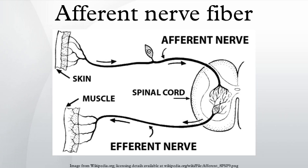All of these sensations travel along the same general pathway towards the brain. From the dorsal root ganglion they travel to the spinal cord, from the spinal cord to the medulla, which then leads to the medial lemniscus of the midbrain. From here it travels to the primary somatosensory cortex of the parietal lobe.